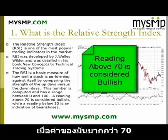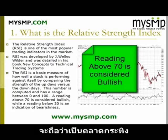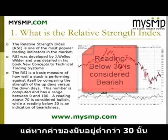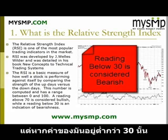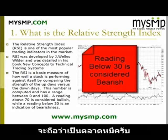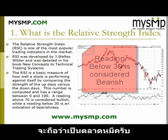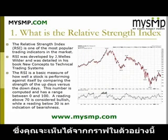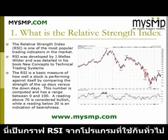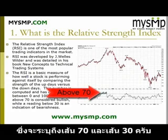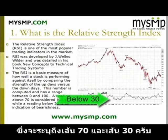A reading above 70 is considered bullish while a reading below 30 is an indication of bearishness. As you can see in the below chart, most charting applications will fill in the background of the RSI as it moves above 70 and below 30.